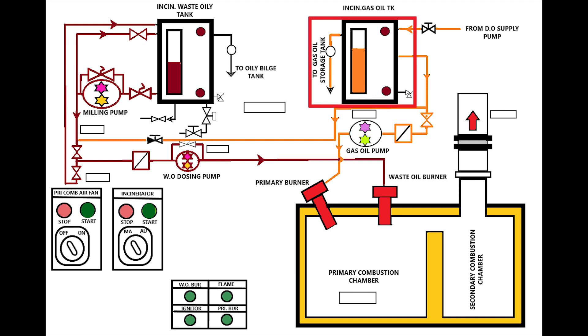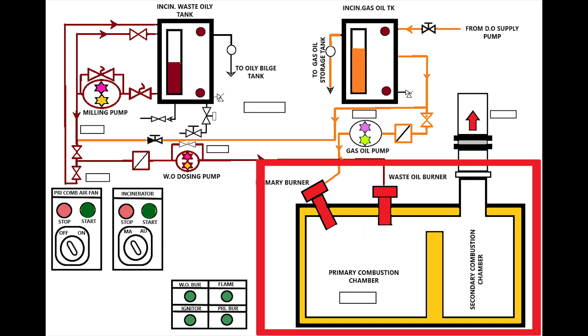The system consists of incinerator gas oil tank, incinerator waste oil tank, gas oil pump, milling pump, waste oil dosing pump, on-off supply for the incinerator, primary combustion air fan sludge on-off. It also consists of primary burner, waste oil burner in the incinerator combustion chamber.